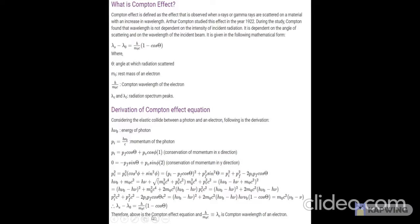Therefore above is the Compton effect equation, and h by m0 c equals lambda c, the Compton wavelength of an electron.